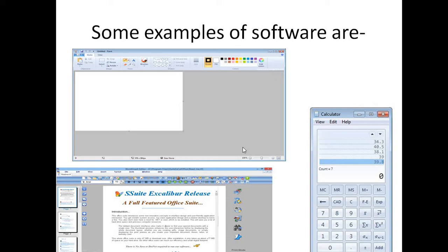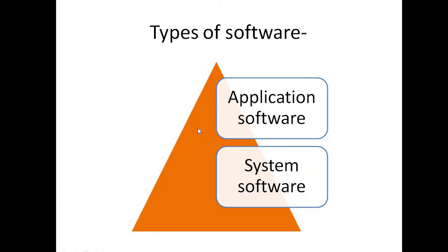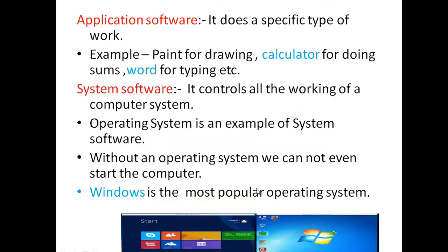Next are the types of software. We have two types of software: the first is application software and the second is system software.